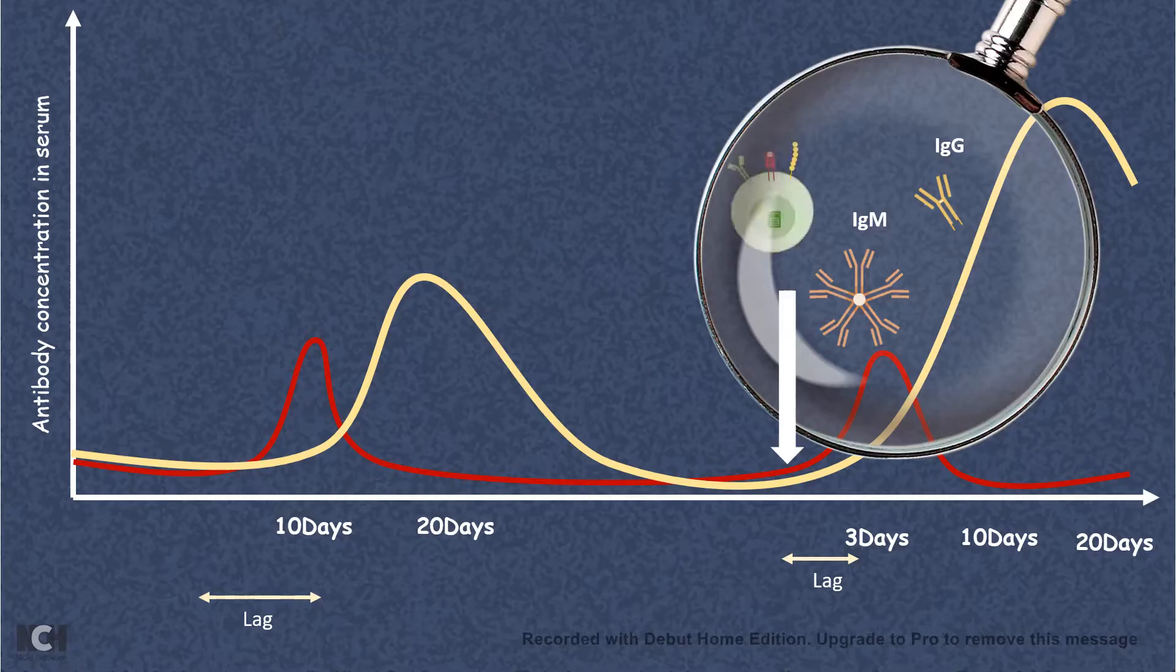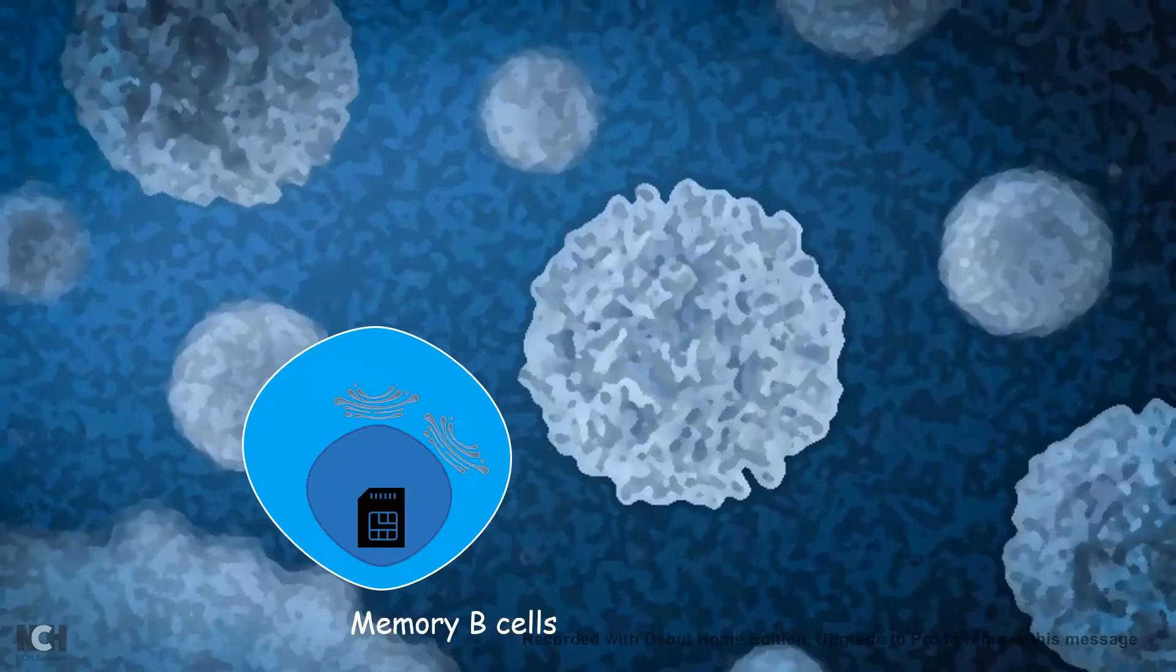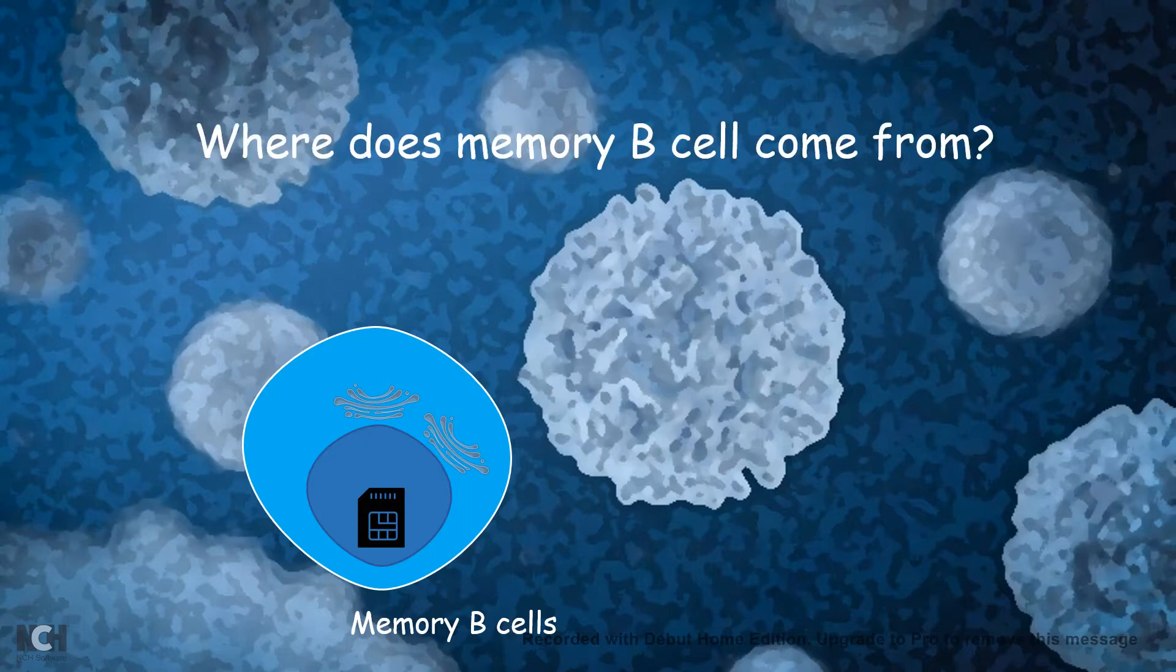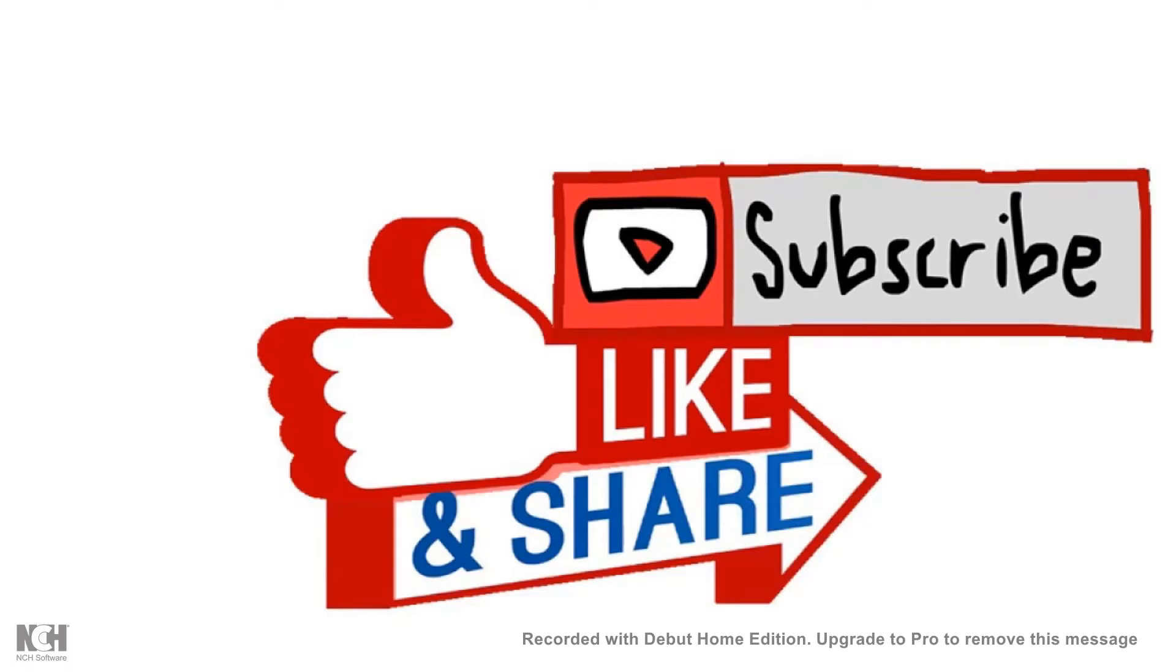The key player of the secondary immune response is the B cell. But have you ever wondered where does this memory B cell come from? I would have a separate video about memory B cells, and I would recommend you to watch that video. If you like this video, give it a quick thumbs up. Don't forget to like, share, and subscribe. Thank you.